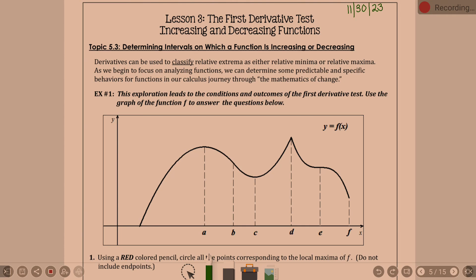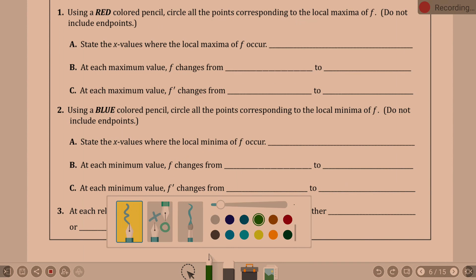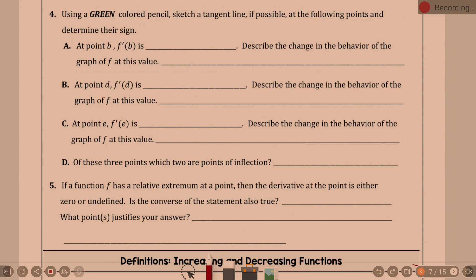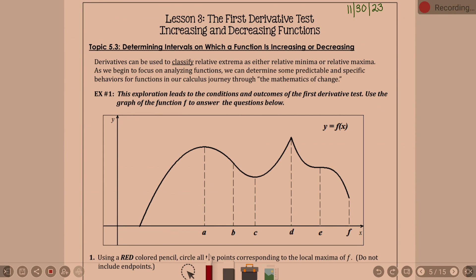Example one is a big exploration here and will help us work to understand the first derivative test. Number one: using a red colored pencil, circle all points corresponding to the local maxima of f. Do not include endpoints. Here's my red. I'm just going to use the dark red. Local maxima of f, not including endpoints.